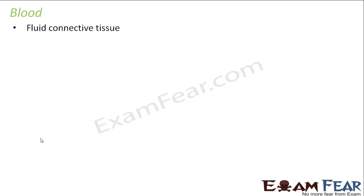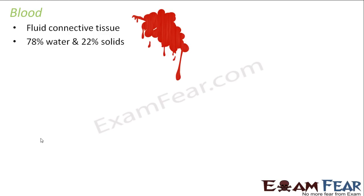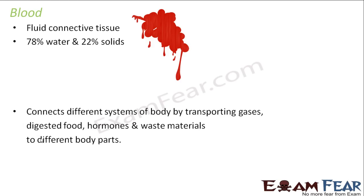Blood is a fluid connective tissue. The question is: why is blood a connective tissue? You might wonder that connective tissue is something which joins things — for example bones, tendons, ligaments — that is quite convincing. But why is blood a connective tissue? Blood consists of almost 78 percent water and 22 percent solids. Since blood connects different systems of the body by transporting gases, digested food, hormones, and waste materials to different body parts, that is why blood is considered a connective tissue.